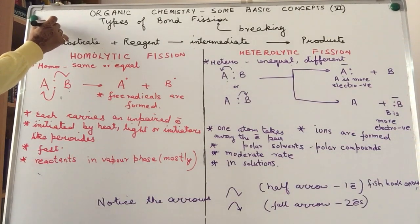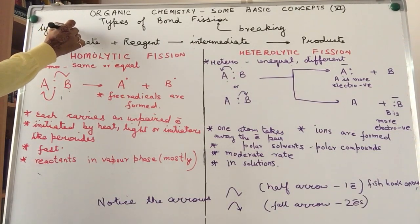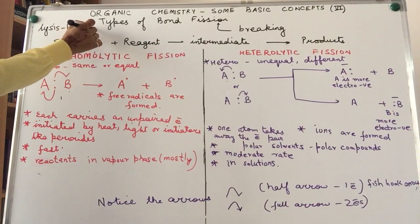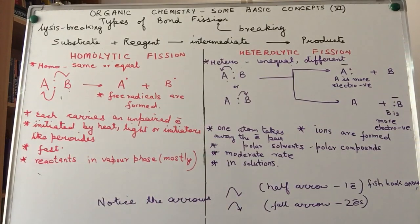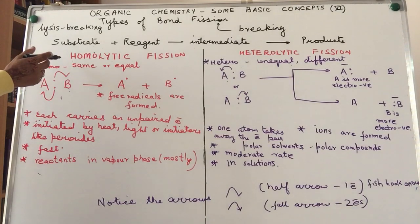Lysis means breaking. Now this breaking can take place in two ways. For example, there's a sandwich and there are two people. The sandwich can be divided in two ways: one, they share the sandwich equally, or the other is whosoever is more powerful takes away the piece of sandwich.